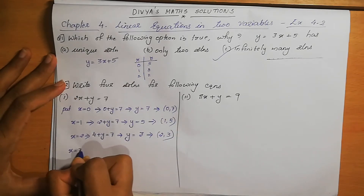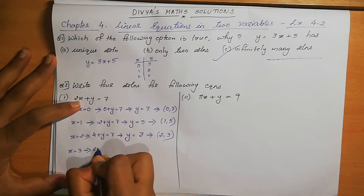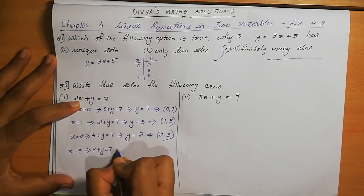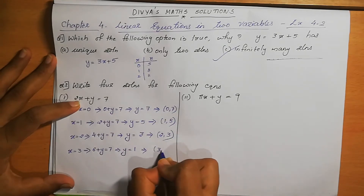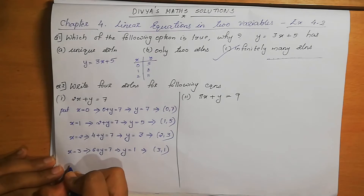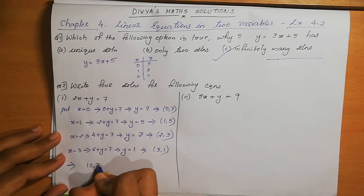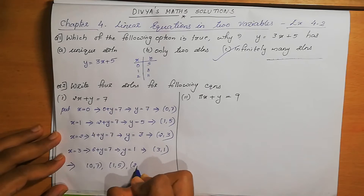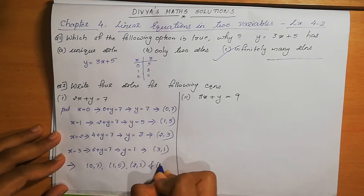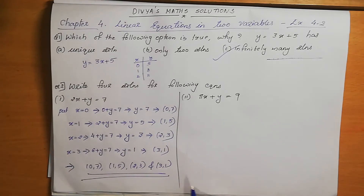Put x=3: 2×3 + y = 7, so 6 + y = 7, giving y = 7 − 6 = 1. The solution is (3, 1). Therefore, the four solutions of 2x + y = 7 are: (0, 7), (1, 5), (2, 3), and (3, 1).